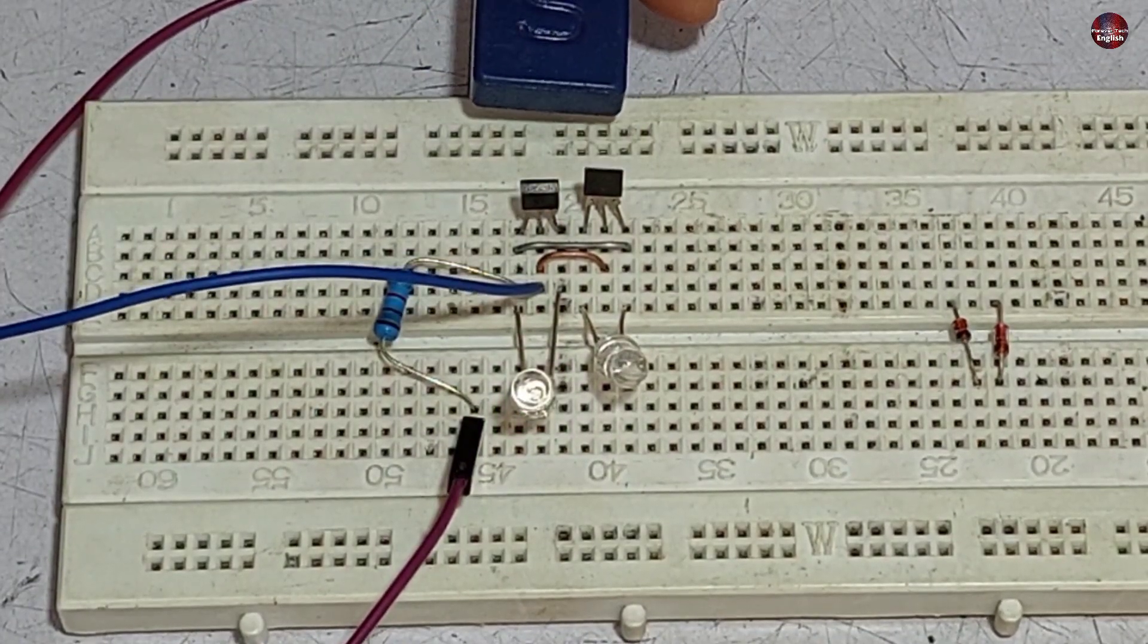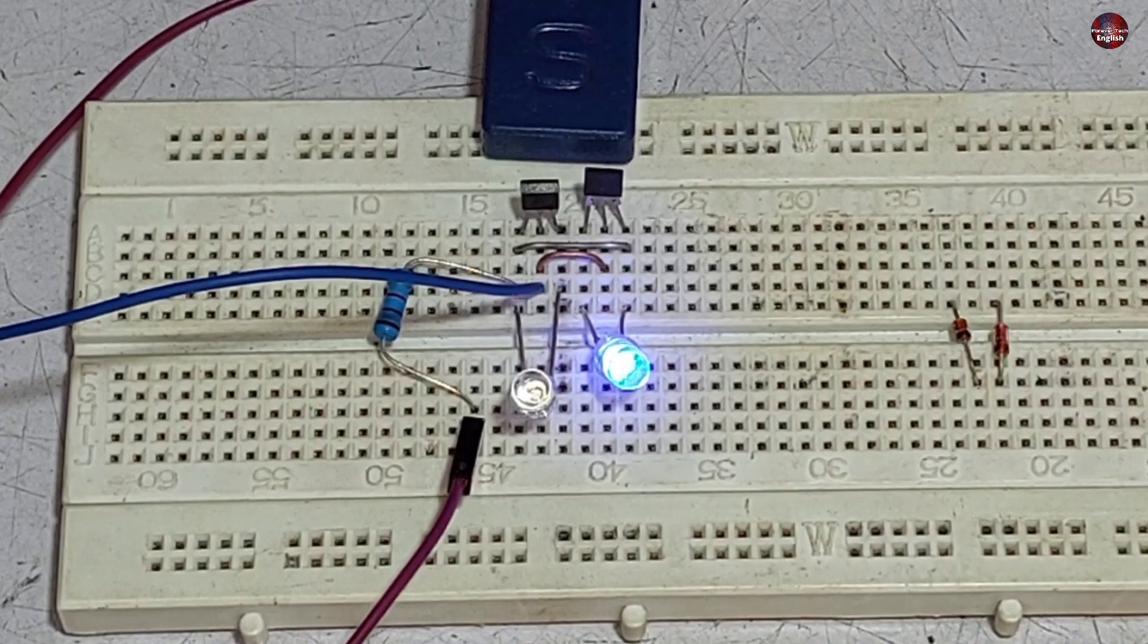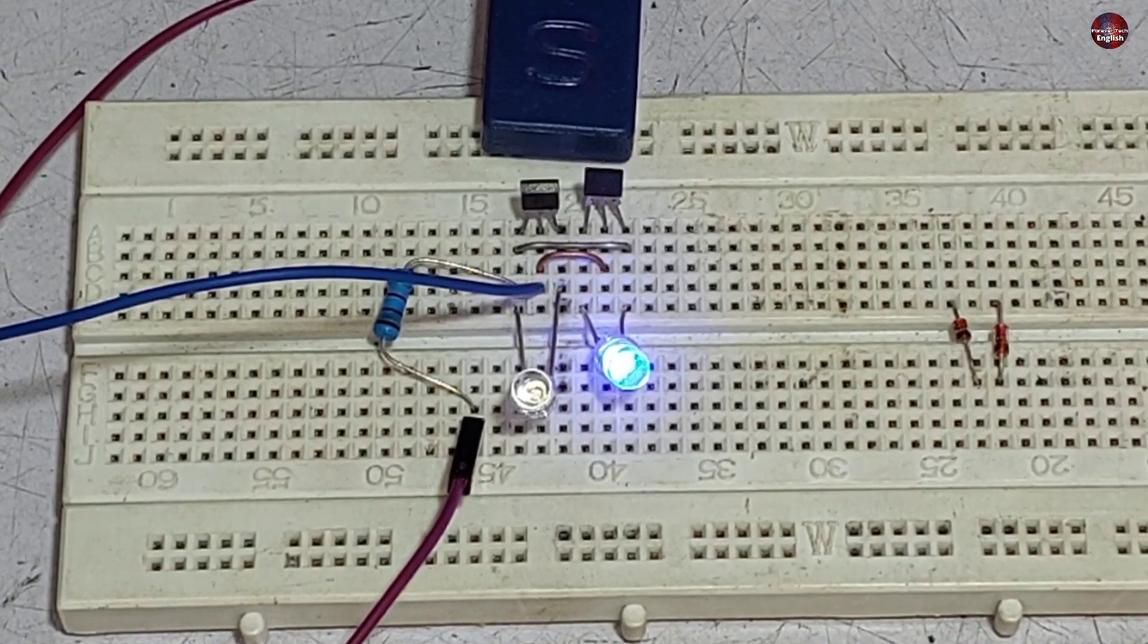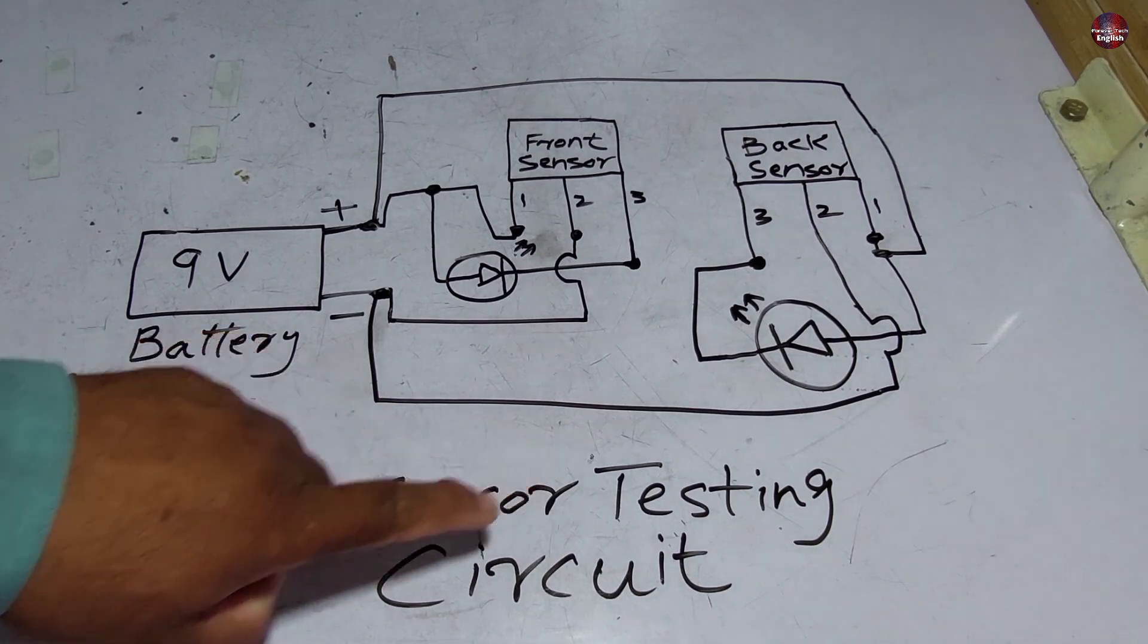Now I have brought the south pole near the sensors, so the blue light has started to glow. And the same effect will be seen when I place the magnet on the other side of the hall sensor. And this is the two-hall sensor testing circuit.